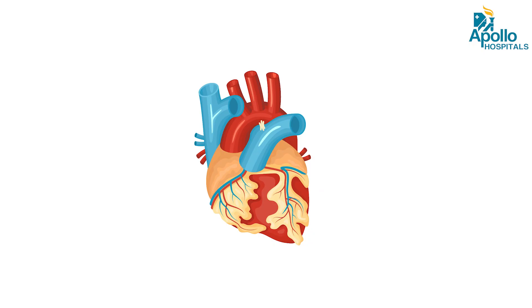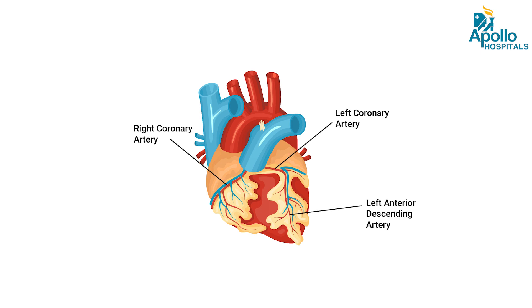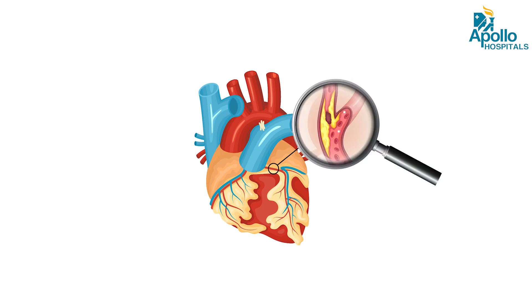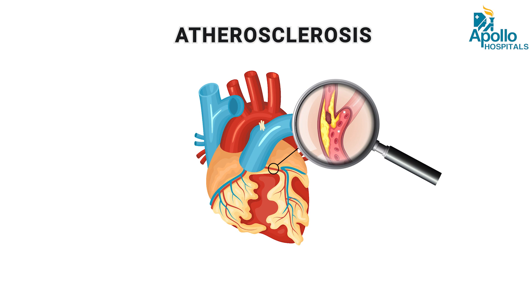Coronary artery disease is a broad entity where the blood vessels in the heart — called coronary arteries, one on the right side and two on the left side — are normally smooth, clean tubular structures. But because of aging, cholesterol plaques, blood pressure, and diabetes, the inside of the arteries develop what is called atherosclerosis.